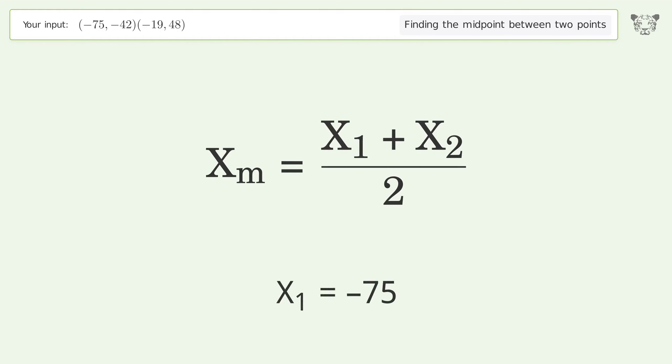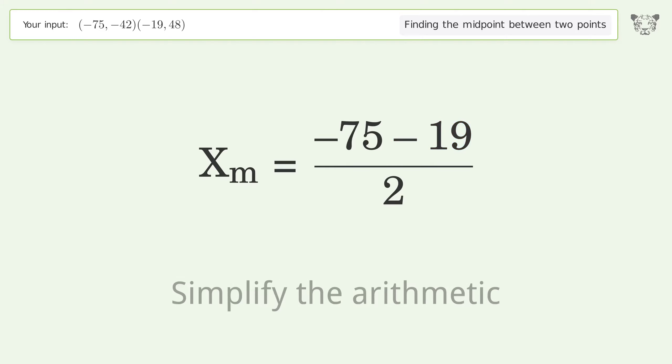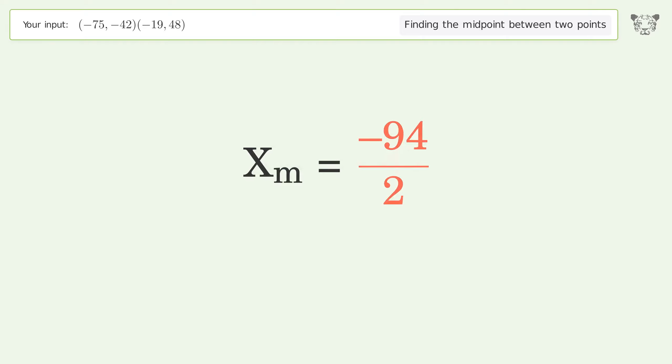Use the x values in the midpoint formula to find the midpoint's x-coordinate. x₁ = -75, x₂ = -19. Simplify the arithmetic.